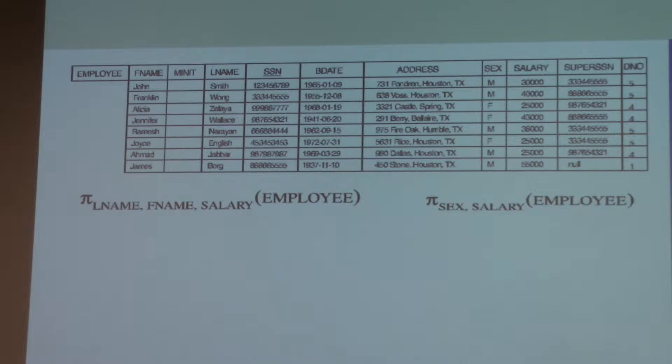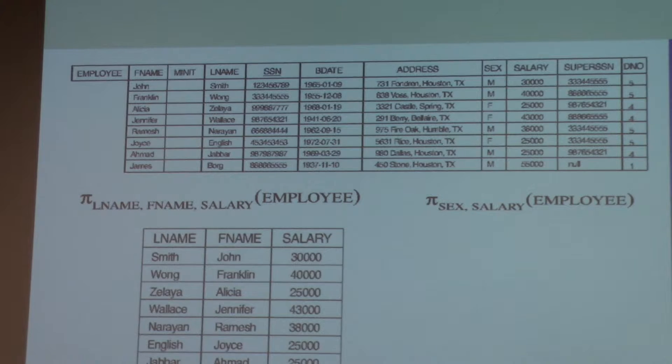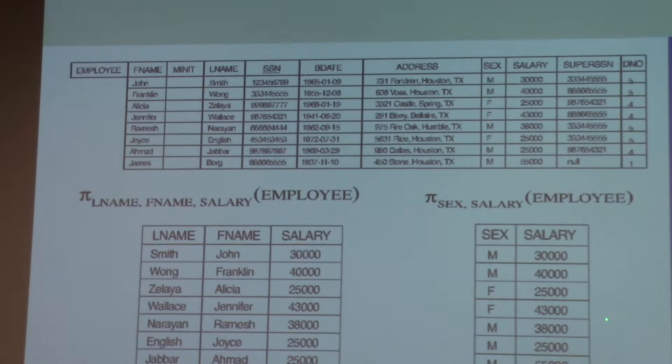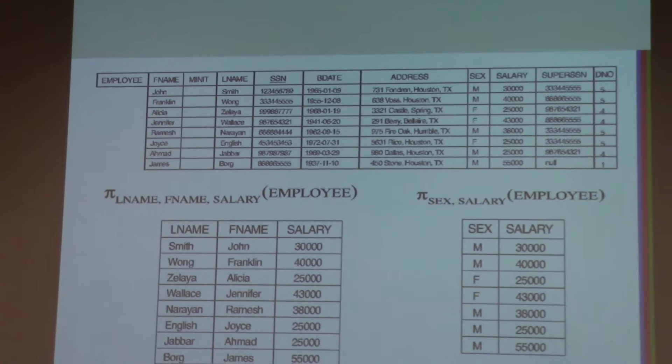So this is an example of the duplication. So I'll put up the last name, first name, and salary of employee. How many tuples? One, two, three, four, five, six, seven, eight. So it's eight tuples. However, if we select the sex and salary, it's not eight. One, two, three, four, five, six, seven. Why?